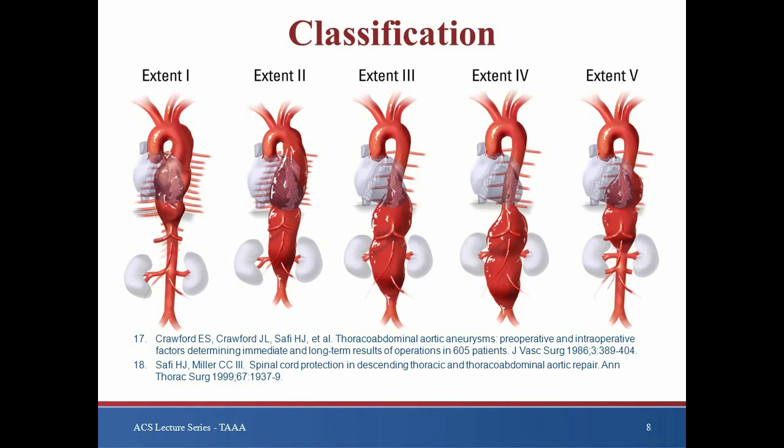In 1986, Crawford described the first TAAA classification scheme based on the anatomic extent of the aneurysm. Type 1 involves most of the descending thoracic aorta from the origin of the left subclavian to the suprarenal abdominal aorta. Type 2 is the most extensive, extending from the subclavian to the aortoiliac bifurcation. Type 3 involves the distal thoracic aorta to the aortoiliac bifurcation. Type 4 TAAAs are limited to the abdominal aorta below the diaphragm. Safi's group modified this scheme, adding Type 5, which extends from the distal thoracic aorta including the celiac and superior mesenteric origins, but not the renal arteries.